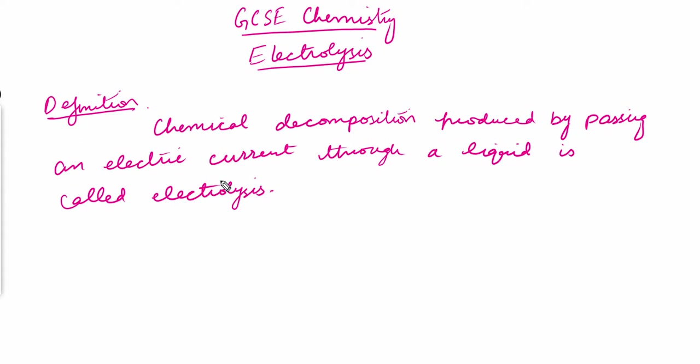Now let me draw a figure and explain the components we use in the process of electrolysis. In simple words, electrolysis is basically the passing of electric current through a liquid. That liquid could be anything — it could be some acid, an aqueous solution, or a molten compound.